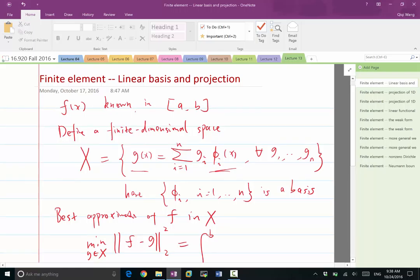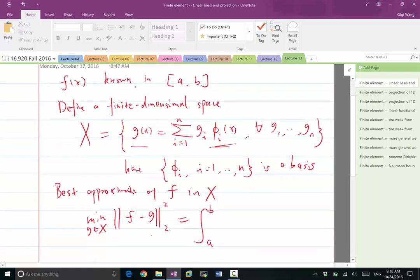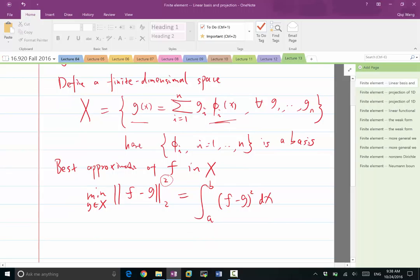f is in a particular domain. The L2 norm of the difference between two functions is the integral of the square of the function and then taking a square root. Now because we are having a square here, the square root cancels, and the square of the L2 norm is simply the integral of the square of the function.